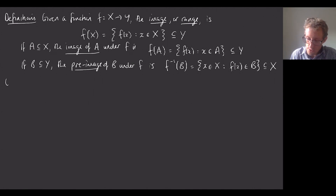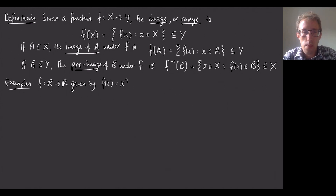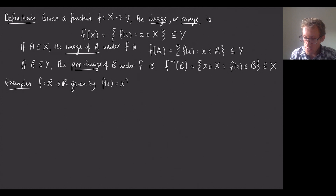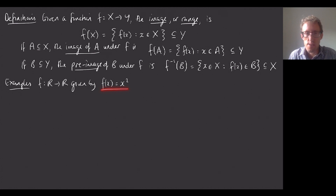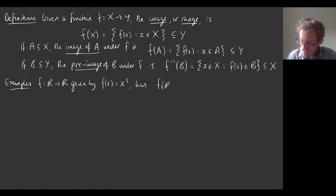Let's look at examples. For f: ℝ → ℝ given by f(x) = x², what's the image? Taking all real numbers, we end up with all non-negative real numbers. So f(ℝ) = [0, ∞). If I look at the image of the interval [0,1], then squaring all values between 0 and 1 gives all values between 0 and 1, so the image of [0,1] is [0,1].